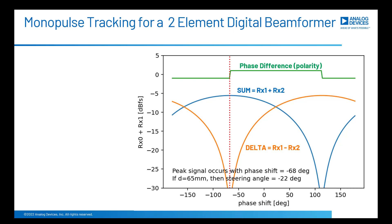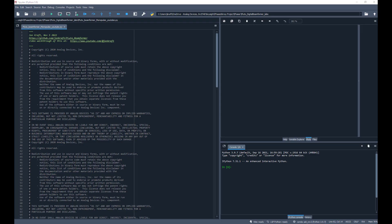This is what our plots will look like: phase polarity plotted at the top, and the sum and delta curves plotted below. All of this is obtained from just one buffer of data from our Pluto. Let's dig into the Python script and figure out exactly how we'll do this, and then build an adaptive algorithm that finds an RF source and locks onto it as it moves around.